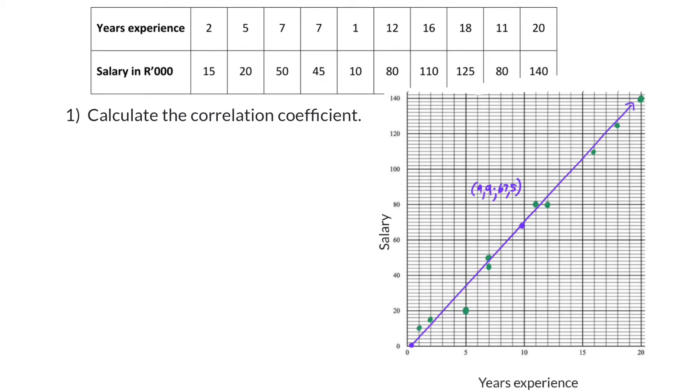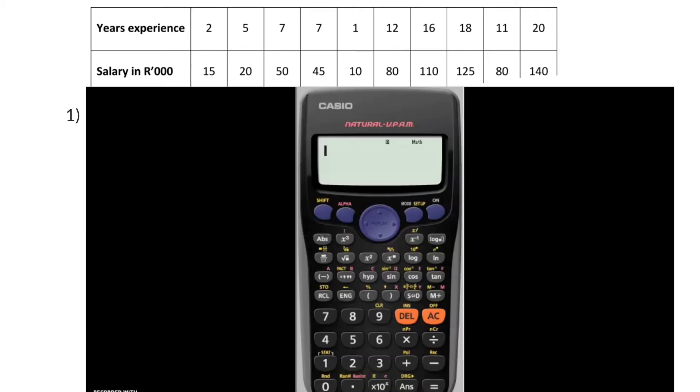Let's see how to calculate the correlation coefficient. I'm reminding you that you start off changing the mode to option 2, the stats mode, and because we are working with two sets of data and the regression line, we once again choose option 2. Now, respectively, you add the two sets of data in the columns for X and Y.